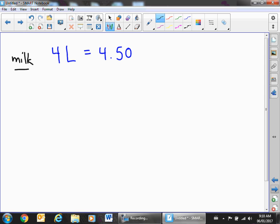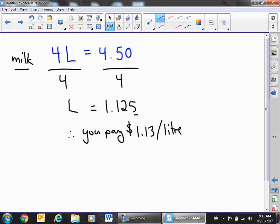So we're going to find out how much a liter is. The way we do that, just basic algebra, if this is four times L, we're simply just going to divide both sides by four. And L equals 1.125. Now, we're doing the currency here, so we can't leave it in a thousand, so we're going to have to round that. So therefore, you're paying approximately $1.13 per liter for milk.